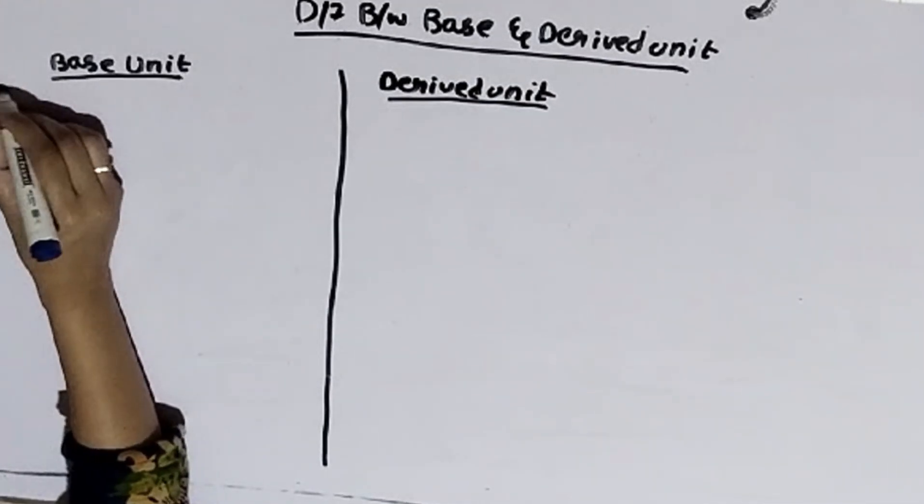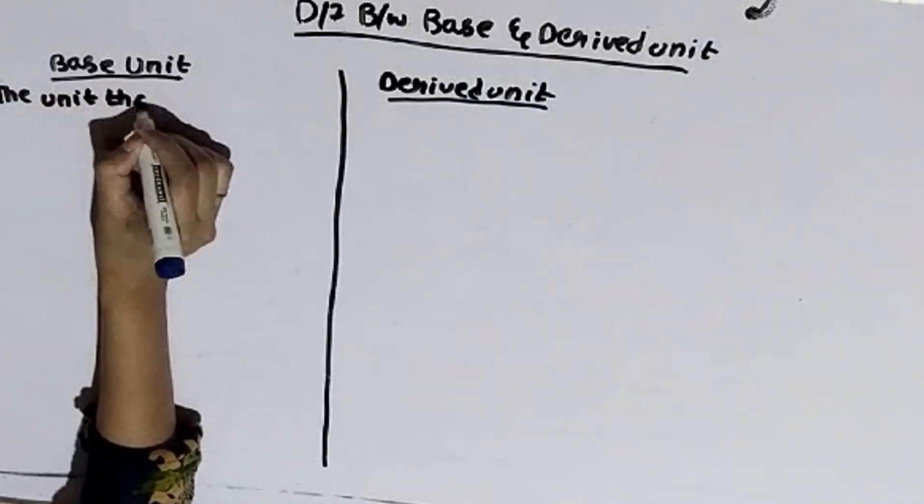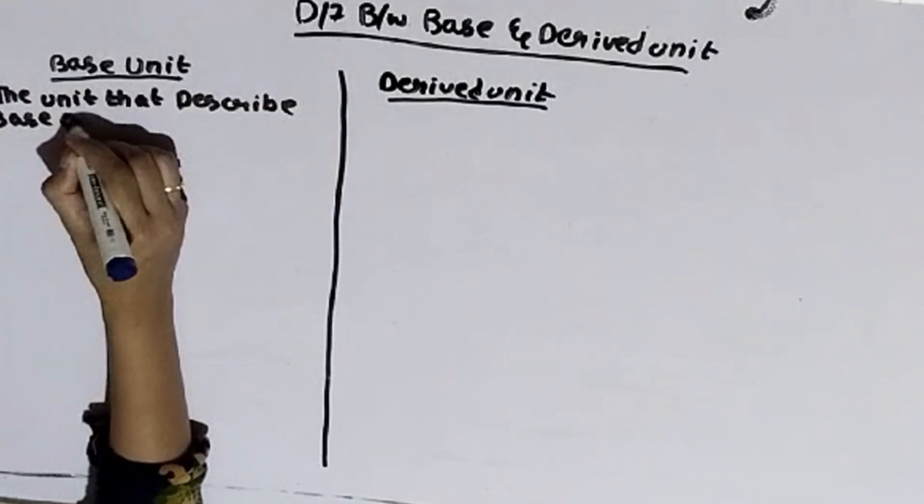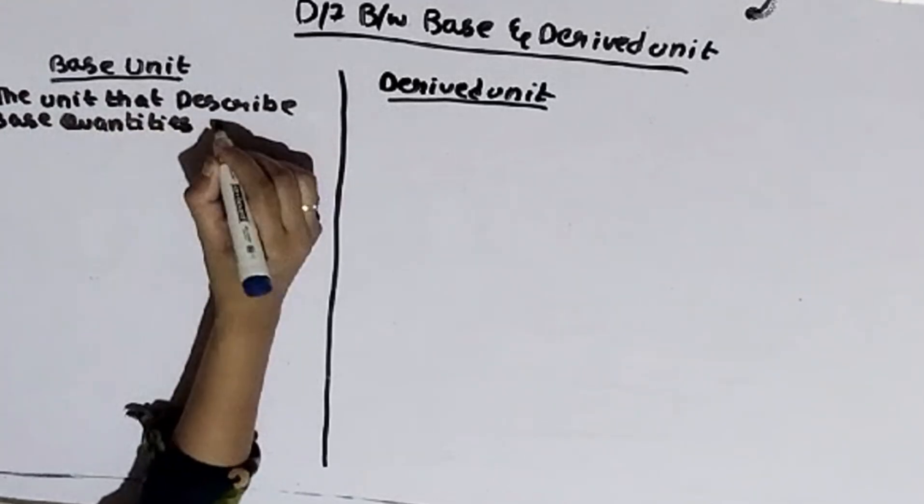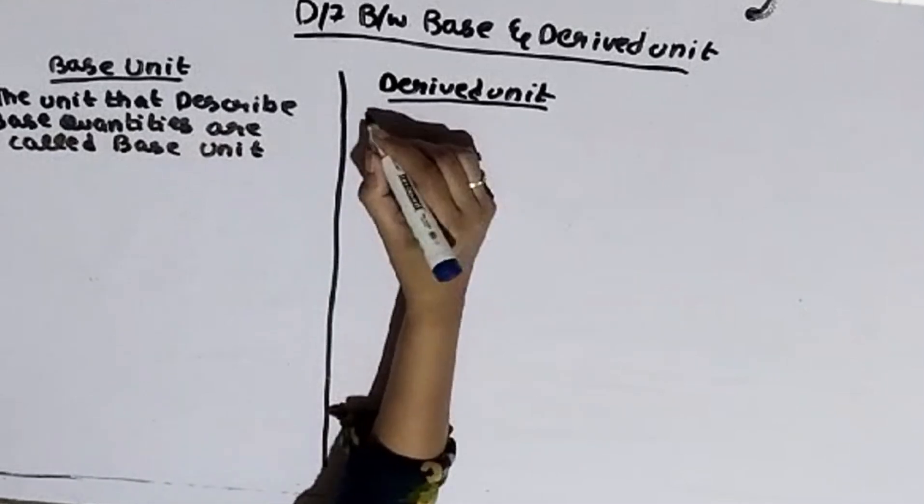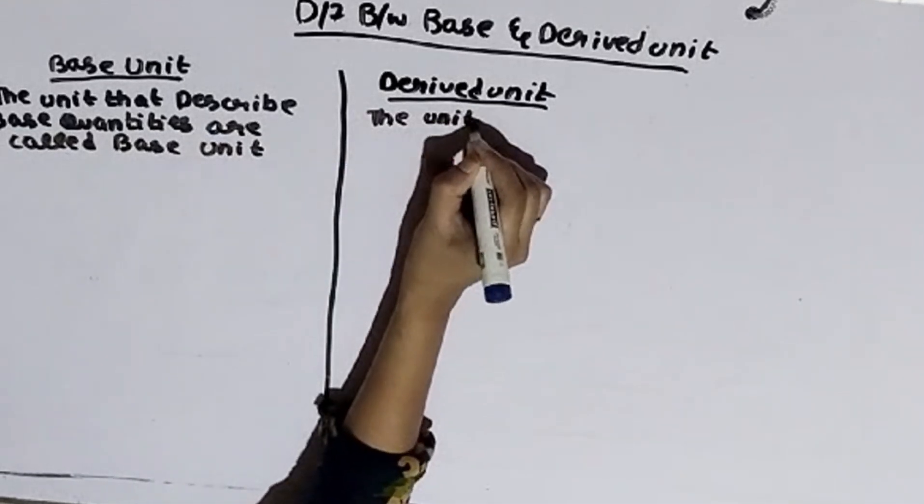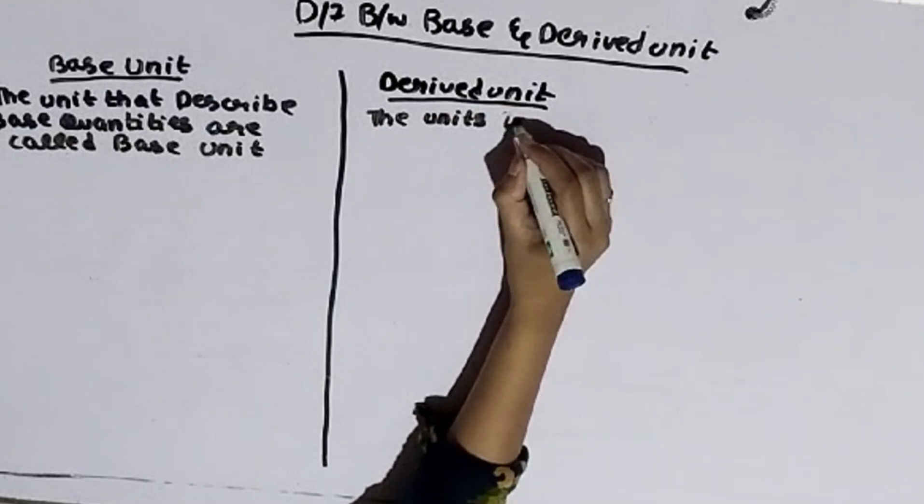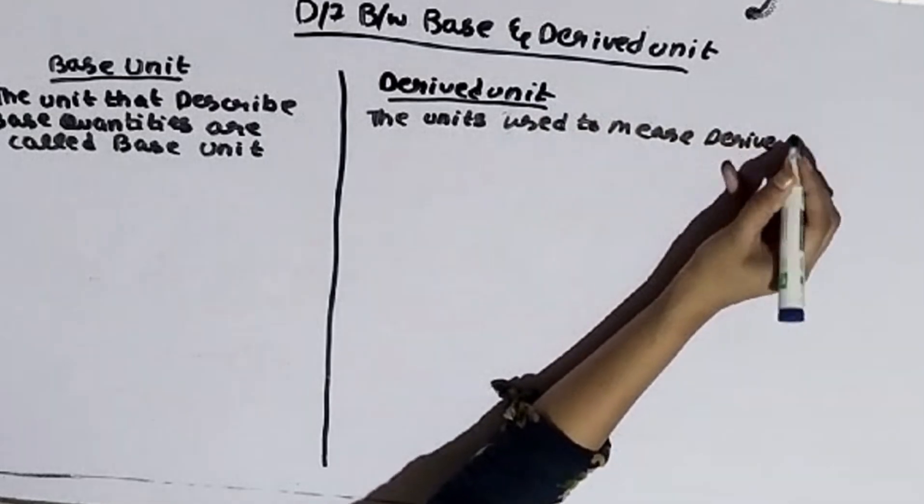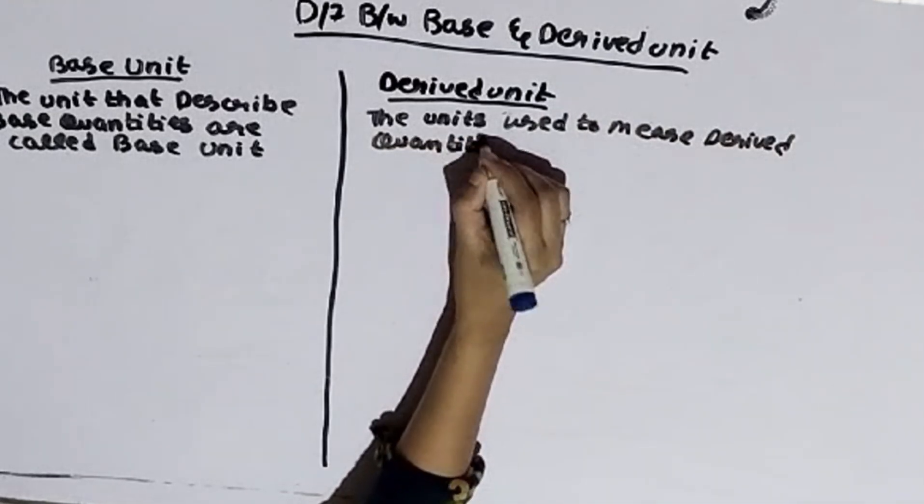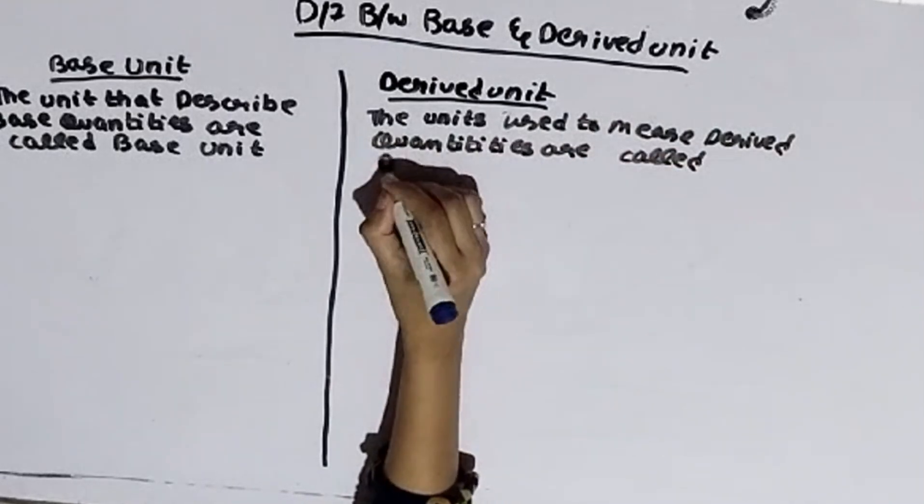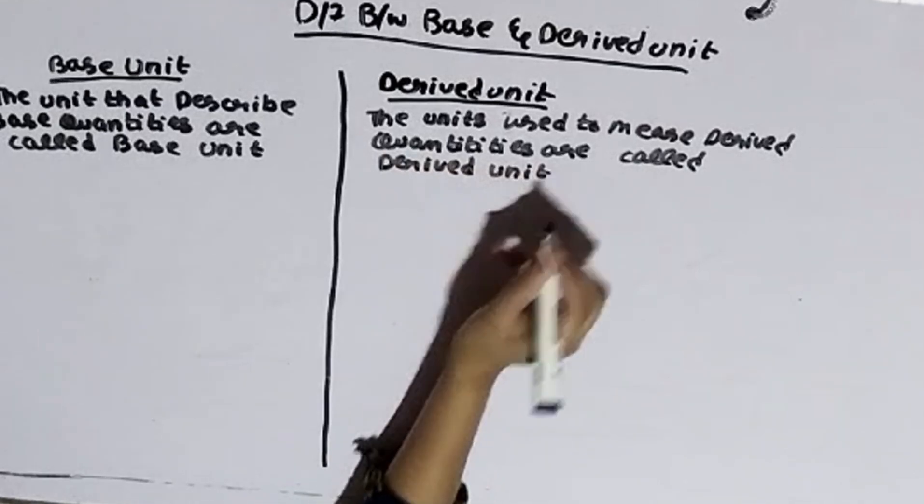Point 1: The units that describe base quantities are called base units. In this way, the units used to measure derived quantities are called derived units.